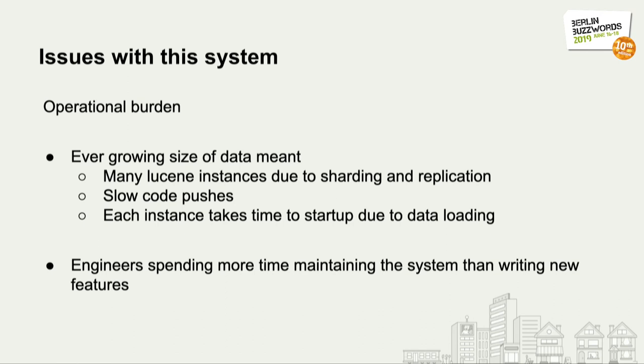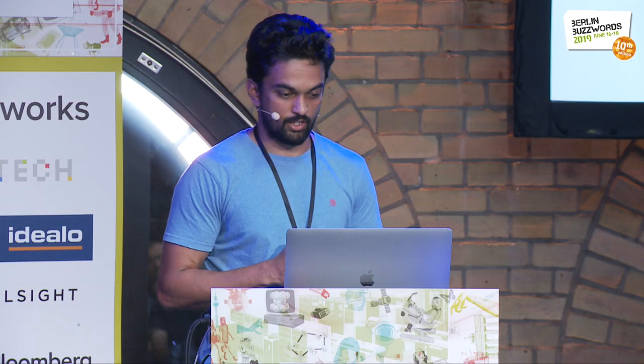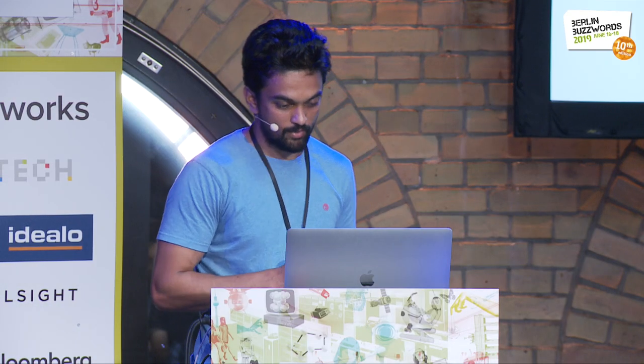And it was more fun besides slow code pushes — we also abused the heap, putting a lot of stuff in it. The heap starts at 8 gigs, grows to 16 gigs, 30 gigs, and then you get stop-the-world garbage collections. What primarily was happening, at least for the infrastructure team, was spending more time maintaining the system rather than writing new features.